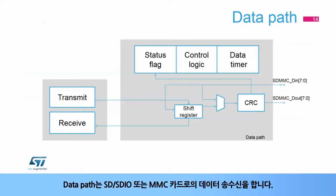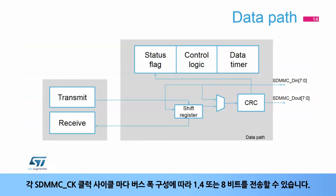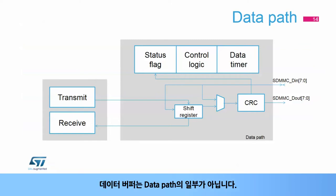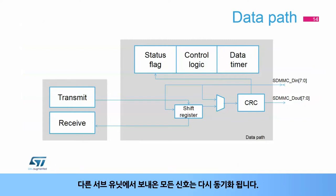The data path transfers data both to and from the SD, SDIO, or MMC card. On each SDMMC CK clock cycle, the data path can send 1, 4, or 8 bits depending on the bus width configuration. Transfer logic is clocked by the SDMMC CLK clock. It is divided into two subunits — one for data sent and one for data received — with a dedicated control bit and status flags. The data buffer is not part of the data path; transmit and receive FIFO logic are mapped in the APB domain. All signals from the different subunits are resynchronized.